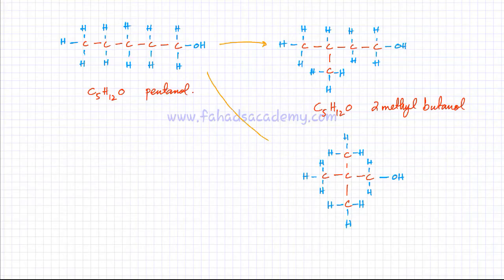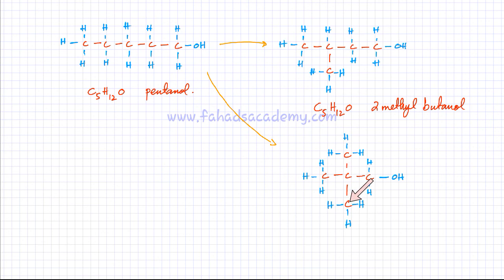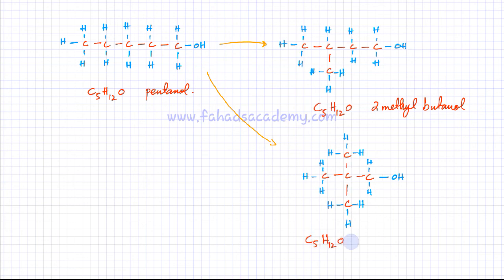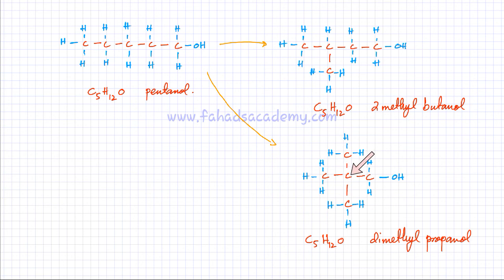Here I've drawn a second chain isomer of pentanol. Again, I've altered the arrangement of the carbon chain — now there are three carbon atoms in a row with two carbon atom branches coming from the middle carbon atom. The OH position is the same and all bonds are completed. It still has five carbon atoms, 12 hydrogens, and a single oxygen atom. The name of this molecule is 2,2-dimethylpropanol, because the main chain contains three carbon atoms and there are two methyl groups attached on the second carbon atom.